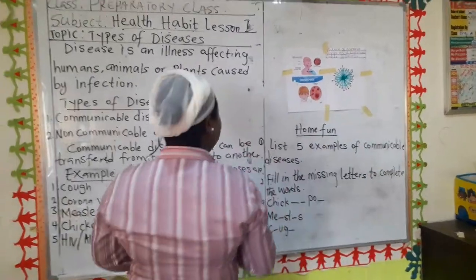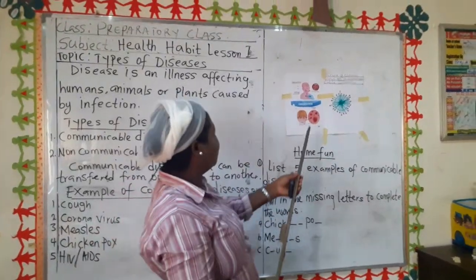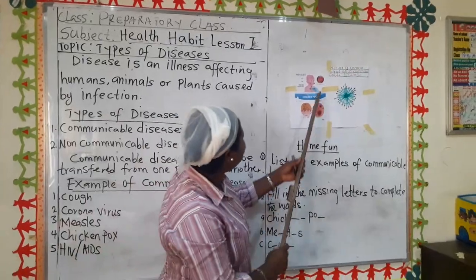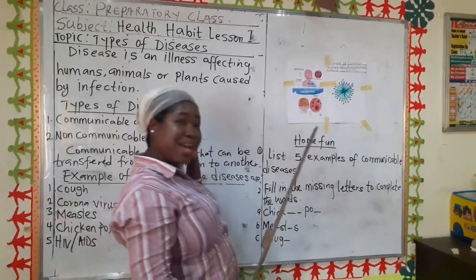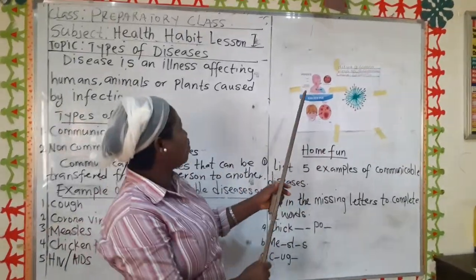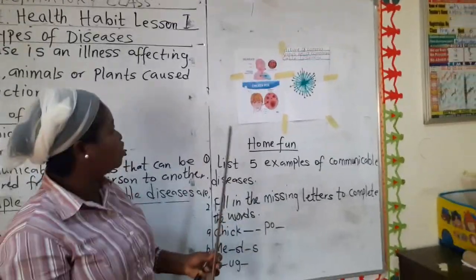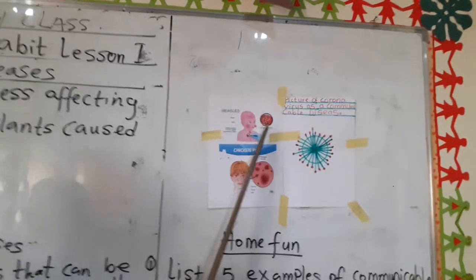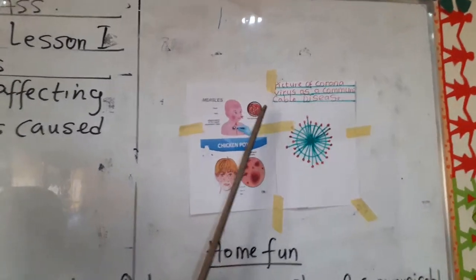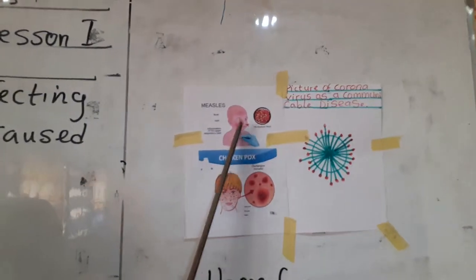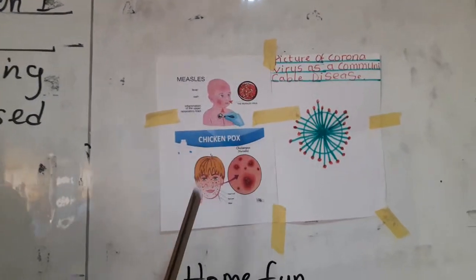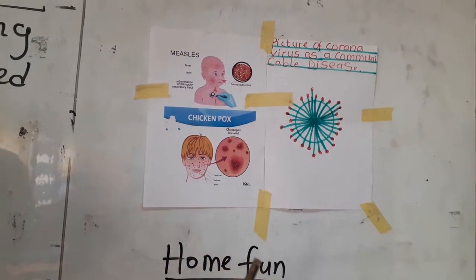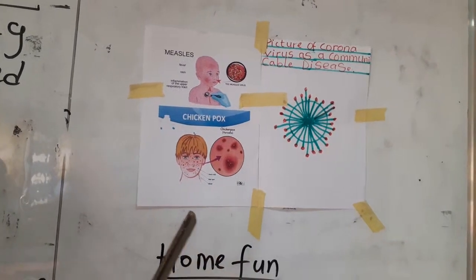Now we are going to look at the pictures of these communicable diseases. We have measles here. If you look at this boy, look at the reddish spots all over his body. He has fever, and it will make your body temperature rise.